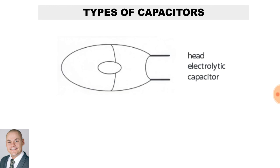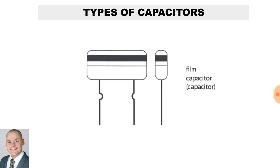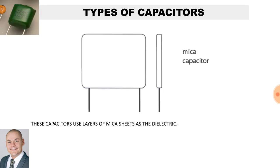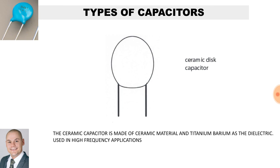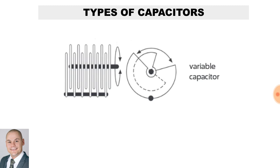Here we have a tantalum electrolytic capacitor and a film capacitor. Here we have a mica capacitor — these capacitors use layers of thin sheets of mica as the dielectric. A ceramic disc capacitor is made of ceramic material and titanium barium as the dielectric, and is mainly used in high-frequency applications. We also get variable capacitors.